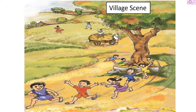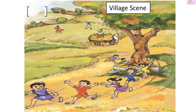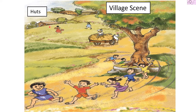So what else can we see in this picture? We can see there are lots of huts — kacha houses — in the background. There are lots and lots of huts here. We can spot three huts in this picture.